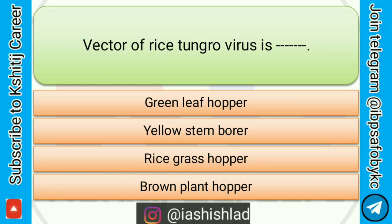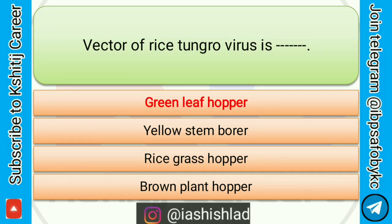Next question is: vector of rice tungro virus is. Options are: green leafhopper, yellow stem borer, rice grasshopper, brown planthopper. Correct answer is green leafhopper.